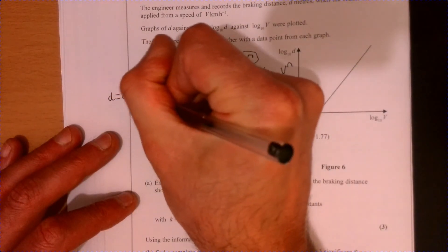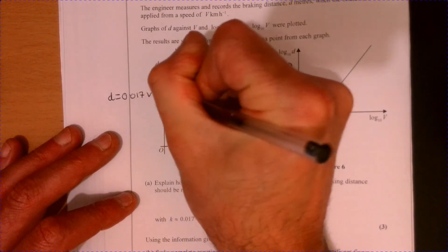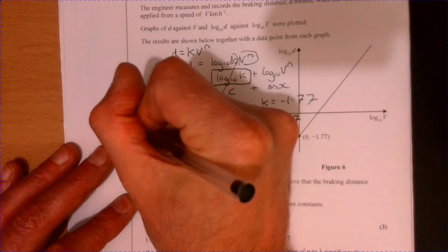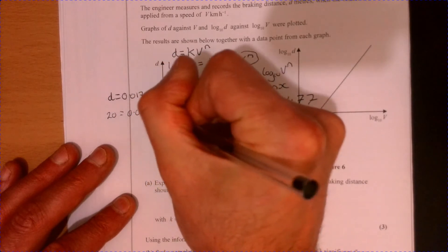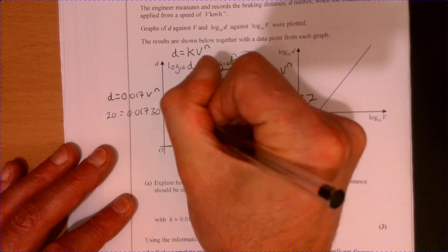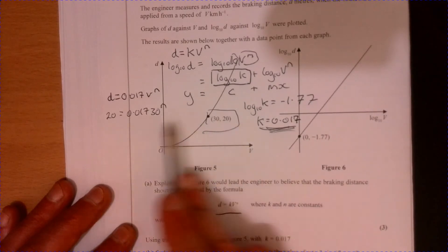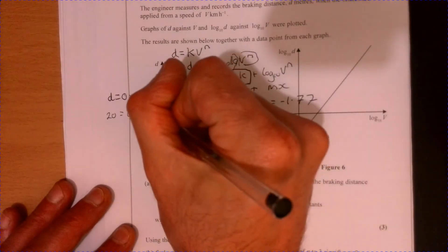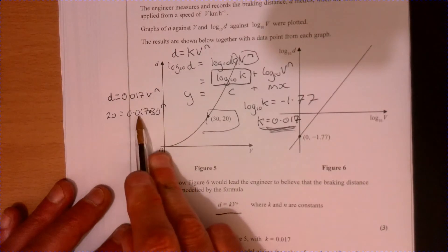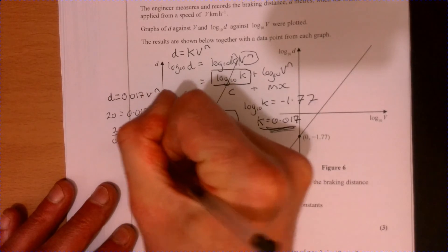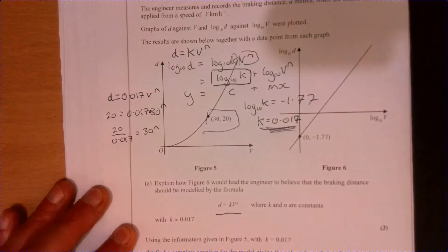Let's start off with what we're looking at. We've got d equals 0.017 v to the n. All we've got to do is substitute in this information. So 20 equals 0.017 and 30 to the n. Obviously what we're doing is we're trying to work out what this n thing is, so if we now divide by, let's make that clear, divide by the 0.017.